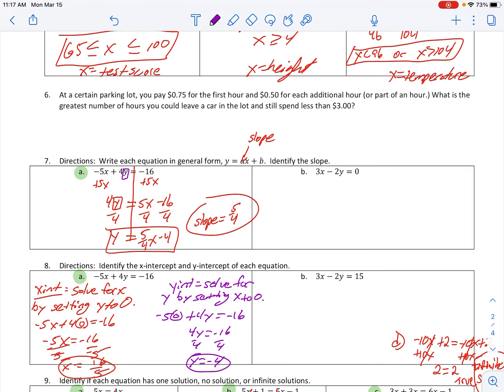Okay, number six. At a certain parking lot, you pay $0.75 for the first hour and $0.50 for each additional hour. What is the greatest number of hours you can leave a car in the lot and spend less than $3?